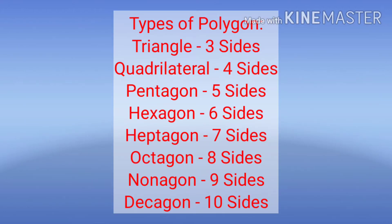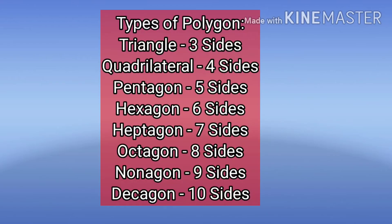The types of polygon are: triangle, quadrilateral, pentagon, hexagon, heptagon, octagon, nonagon, decagon, etc. You can identify these polygons by the number of line segments: triangle has 3, quadrilateral has 4, pentagon has 5, hexagon has 6, heptagon has 7, octagon has 8, nonagon has 9, and decagon has 10 line segments.